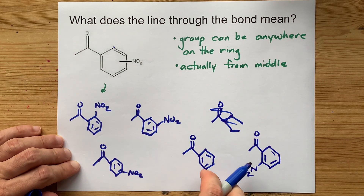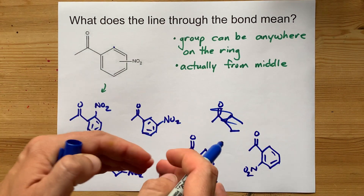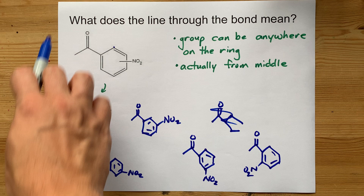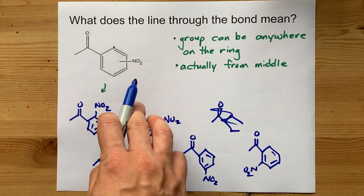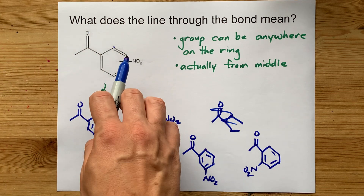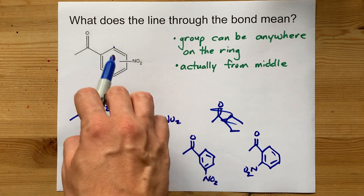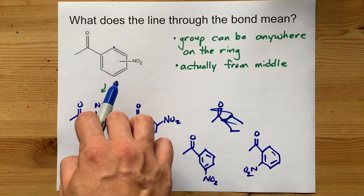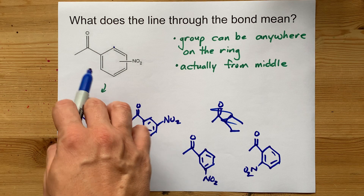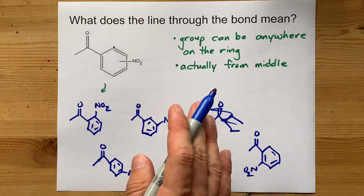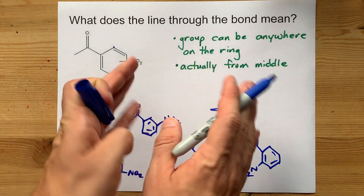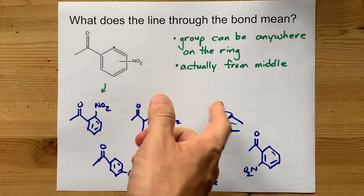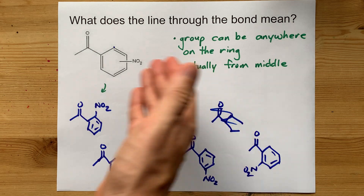All of these together are represented by this structure, showing that the NO2 could have been there, or there, or there, or there, or there. That's what it means. Easy peasy once you understand what it means.